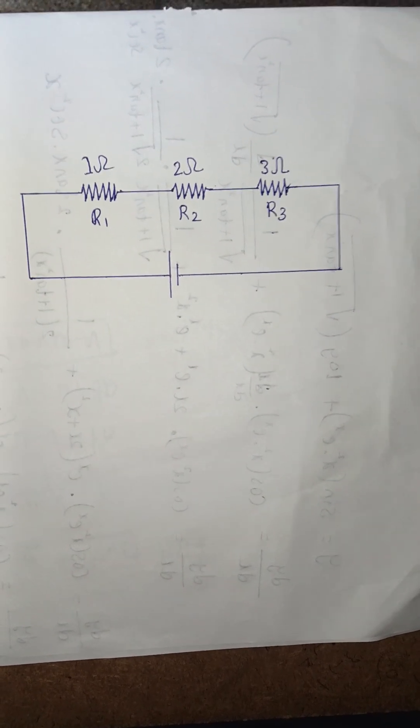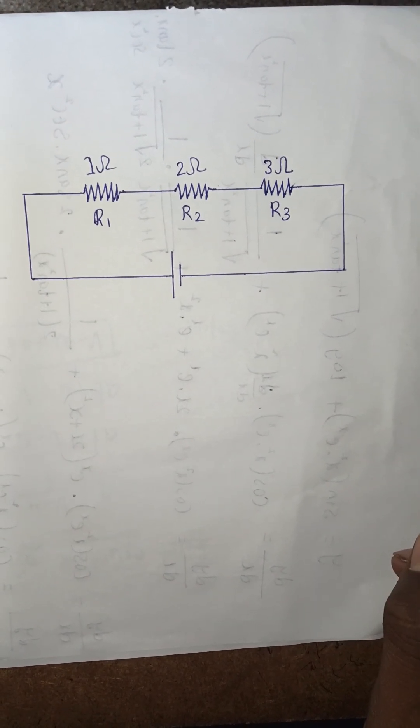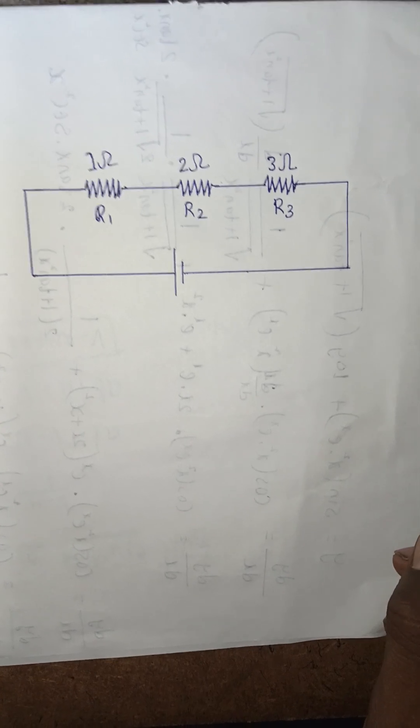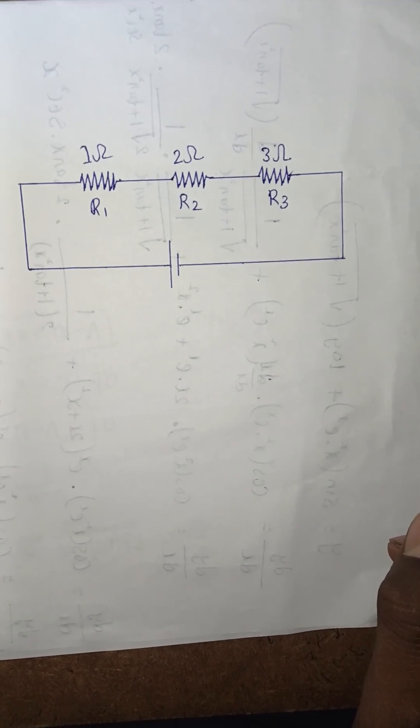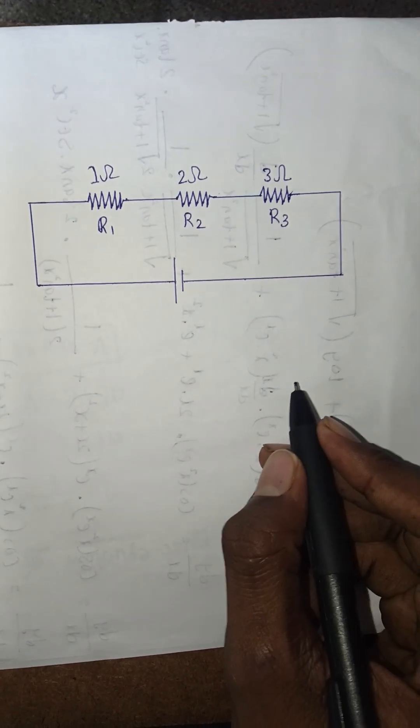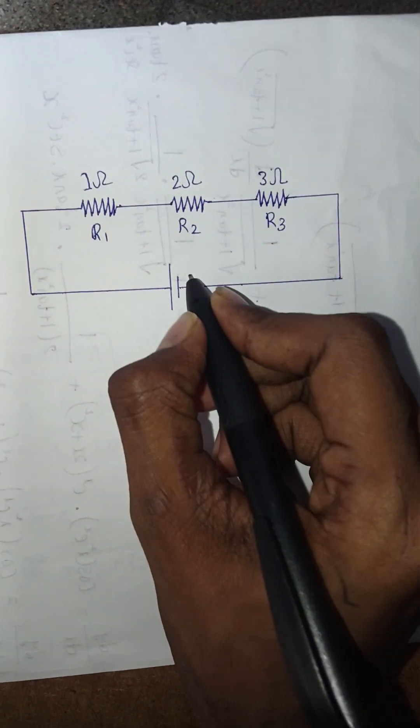Hello guys, in this video we have to find the effective resistance as well as the current across each resistor in this circuit. Here the voltage across the battery is 9 volts.